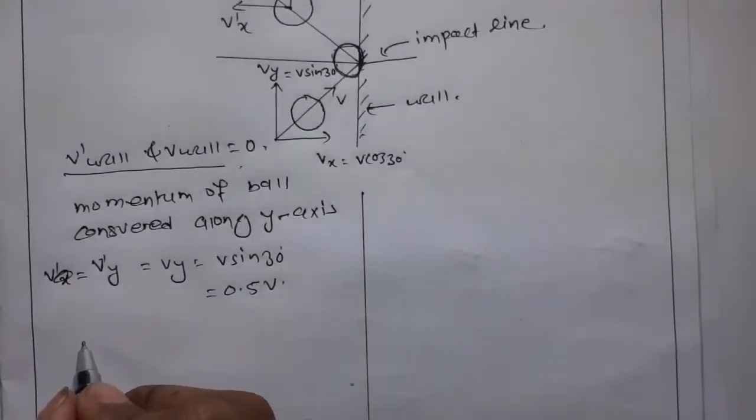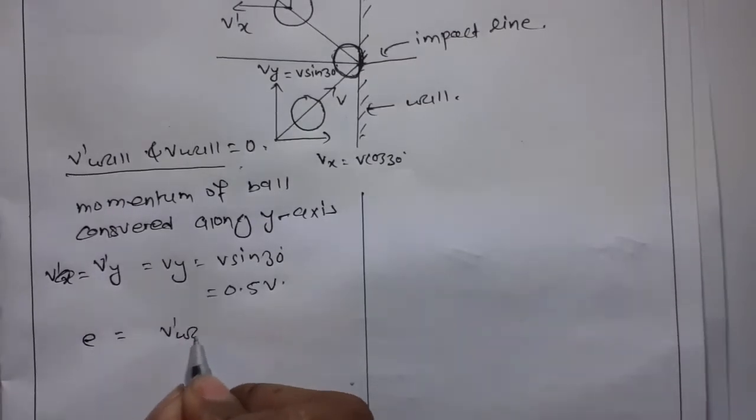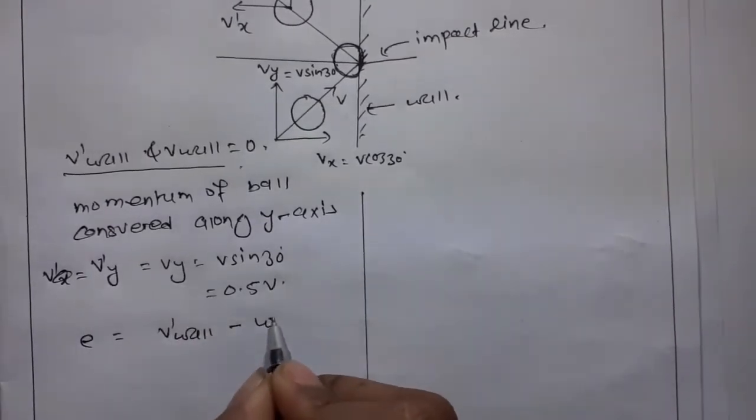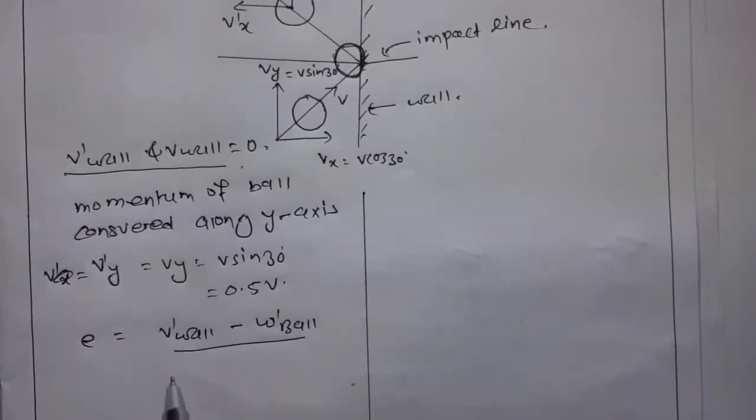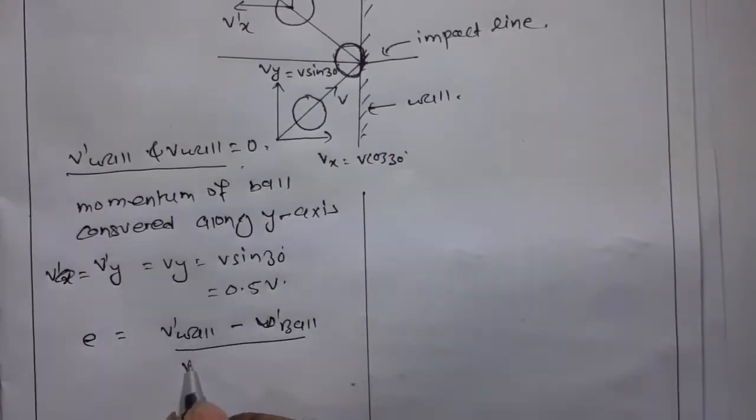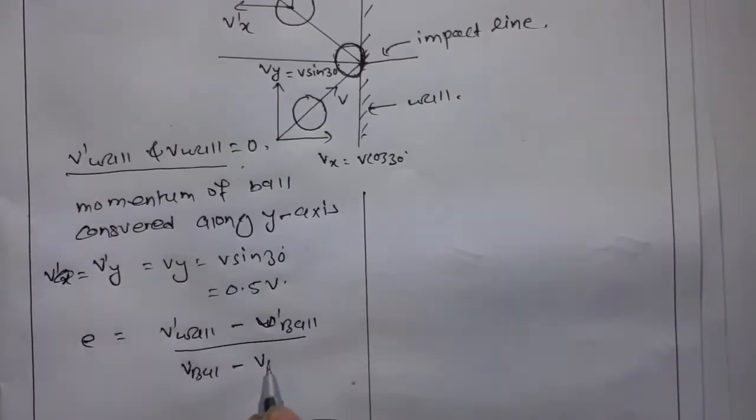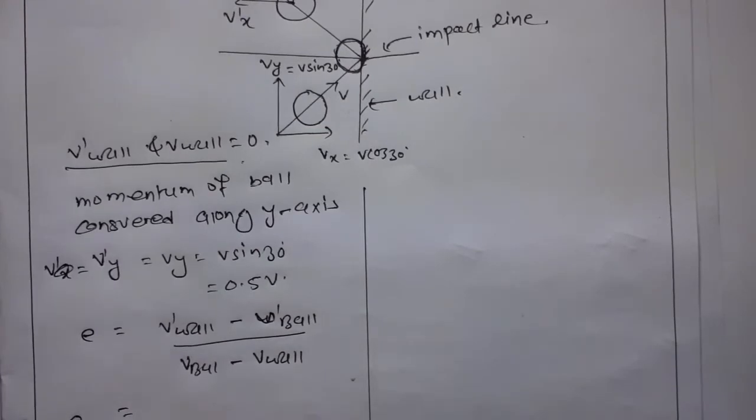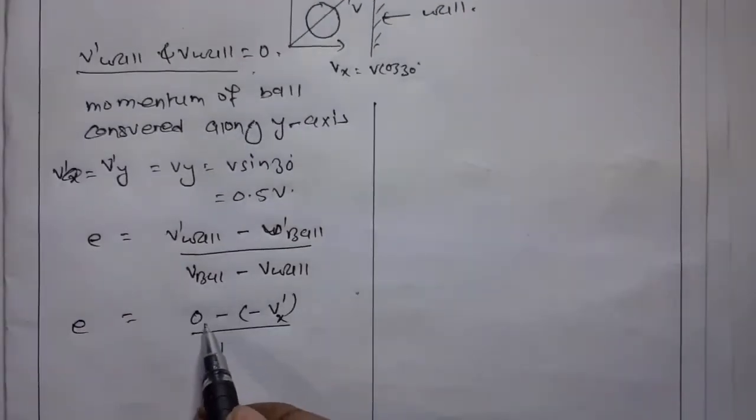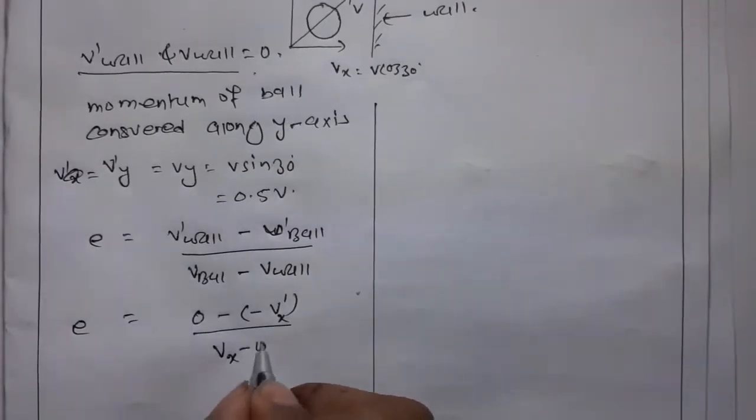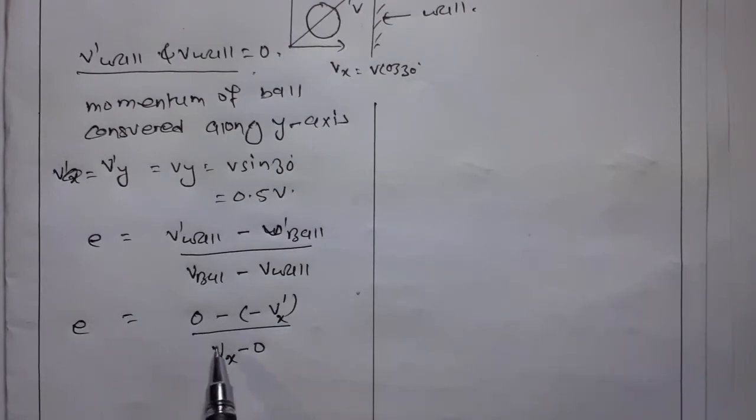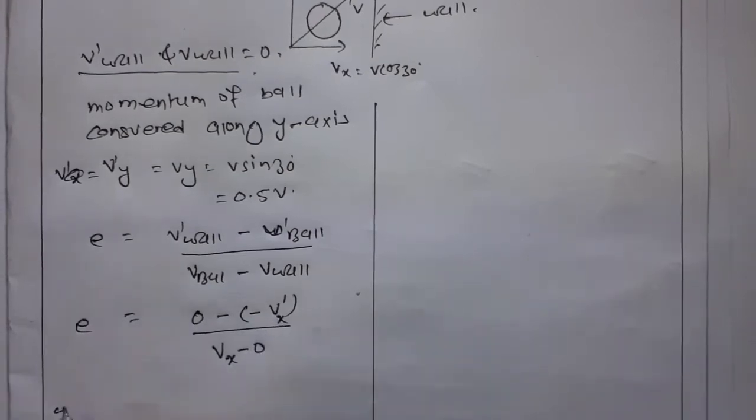The coefficient of restitution e = (v'_wall - v'_ball)/(v_ball - v_wall) = (0 - (-v'_x))/(v_x - 0). Since the ball rebounds, we have -v'_x in the numerator. Therefore e = v'_x/v_x.